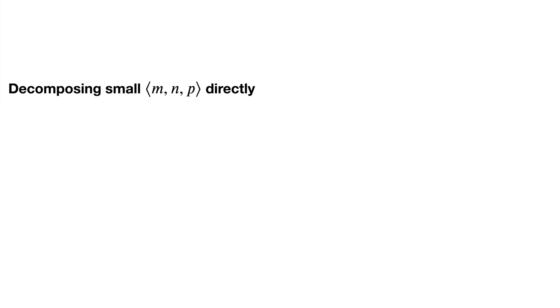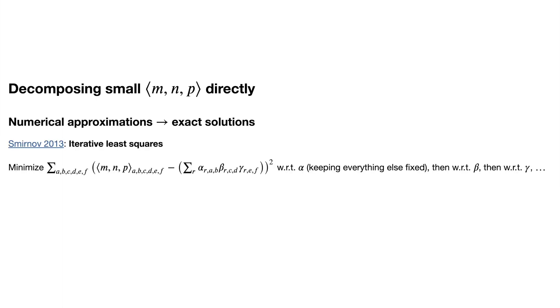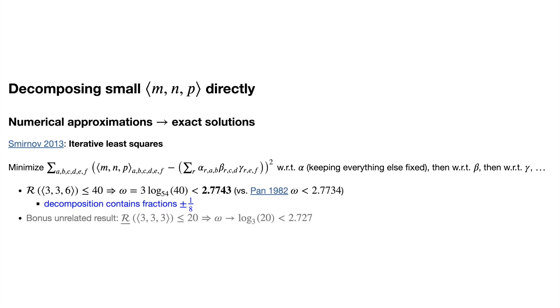In recent years, more people have been trying to find low rank decompositions of small matrix multiplication tensors directly, mostly with the help of computers. There are a few different approaches. One of them is to create a numerical approximation of a decomposition and then turn it exact. Smirnov in 2013 did this using iterative least squares and found a rank 40 decomposition of the 3×3×6 tensor, which achieves runtime exponent of 2.7743, which is really close to Pan's result from 1982.